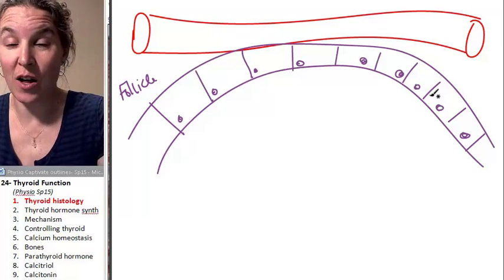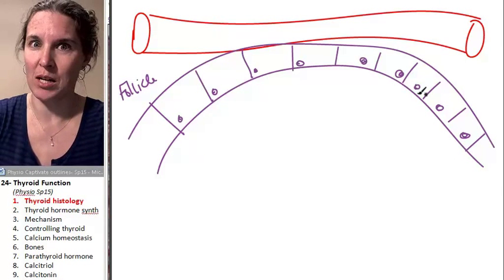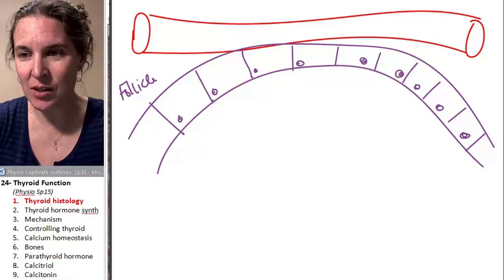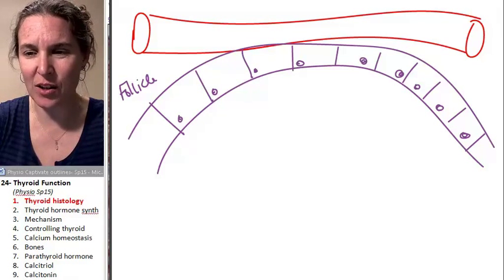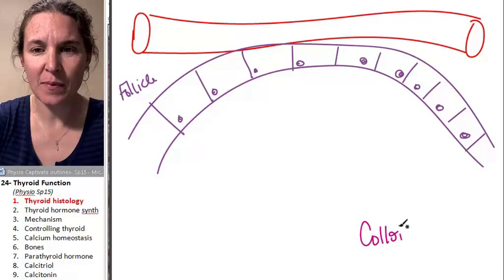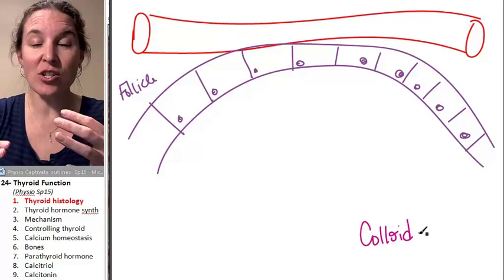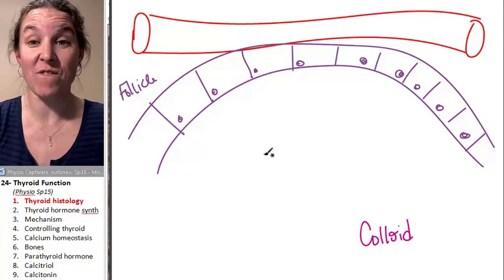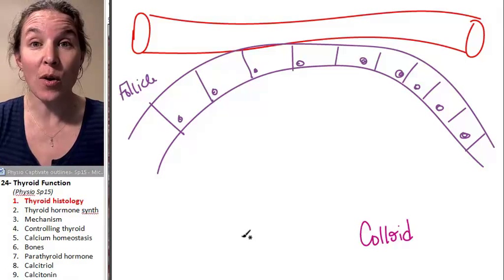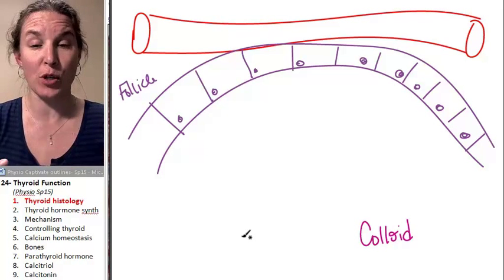So I cannot continue the follicle to make it completely round, but it is. And the space in the center is filled with goop, and it's called colloid. And there's actually really important functions that happen inside this, and this space is where thyroid hormone is kind of put together.